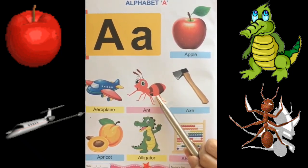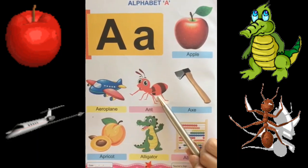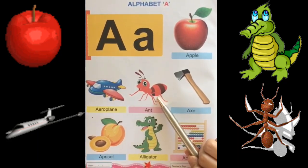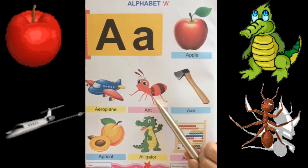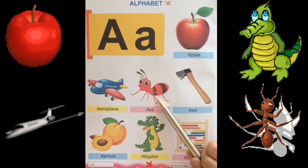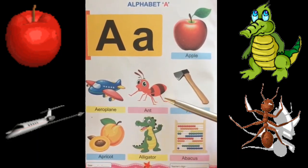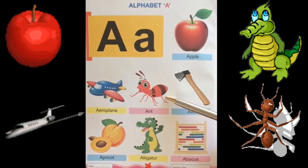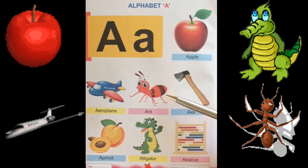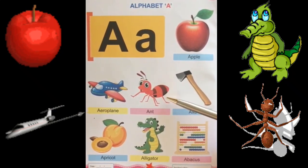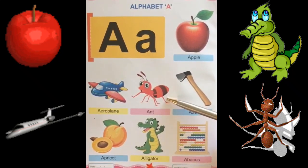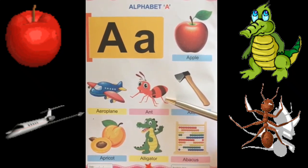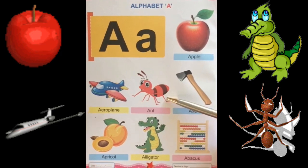Ant. Ant is an insect. Yeh small size ka hota hai. Yeh hard work karta hai. Iski speed kaafi slow hoti hai.